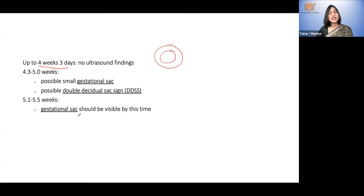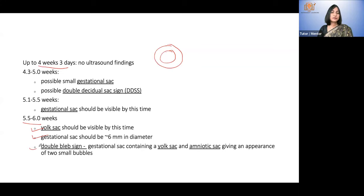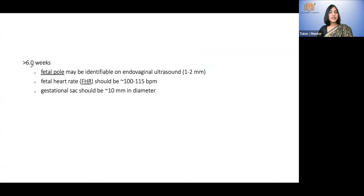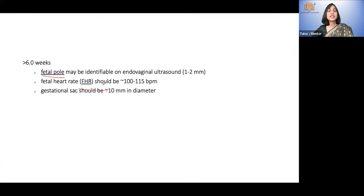Up to 5.5 weeks, the gestational sac should be visible and the choriodecidual reaction should be seen. From 5.5 to six weeks — five days to six weeks — you see a yolk sac; the gestational sac is about six millimeters and the double bleb sign is sometimes seen. After six weeks, the fetal pole may be identifiable and fetal heart should be present, with a fetal heart rate of 100 to 115 beats per minute. The gestational sac is around 10 millimeters.